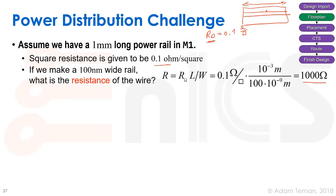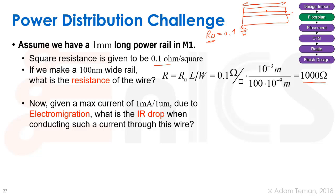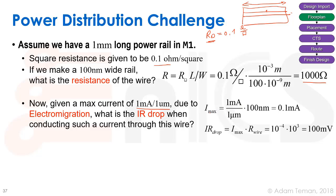One kilohm is definitely not zero. If the electromigration guideline sets a max current of 1 mA/µm, and our rail is 100nm wide, the maximum current is 1 mA/µm × 0.1µm = 0.1 mA. The IR drop is then 0.1 mA × 1,000 Ω = 100 mV — which is pretty bad and shows why we can't just ignore power rail resistance.